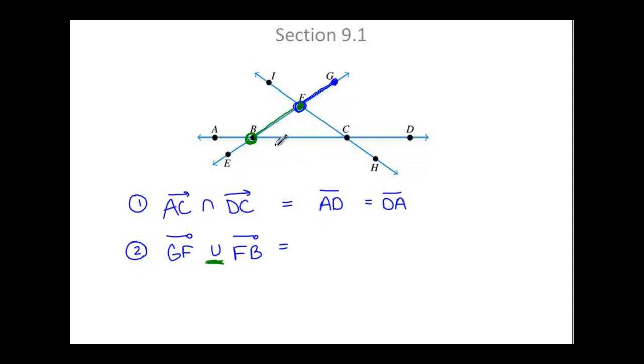So the union of those two half open line segments would begin at G. It would include G. However, it would not include B. So we have, as a result, another half open line segment, GB.